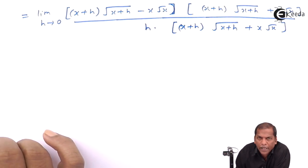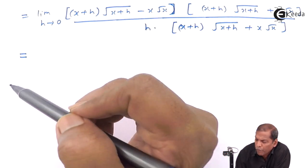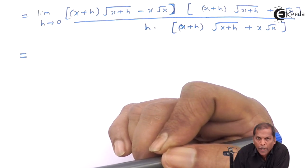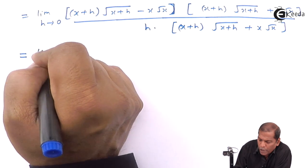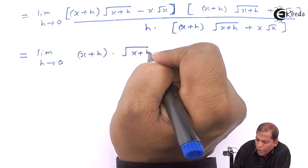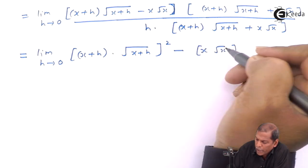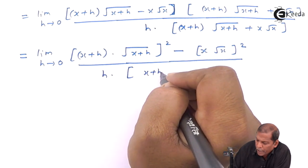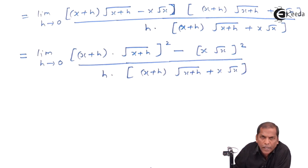Now the numerator is of the type (a minus b)(a plus b), where a represents (x+h) into root(x+h) and b represents x root x. Applying the formula (a+b)(a-b) = a² minus b², we get limit h tends to 0 of [(x+h) into square root of (x+h)]² minus [x into root x]², divided by h into [(x+h) into square root of (x+h) plus x root x].